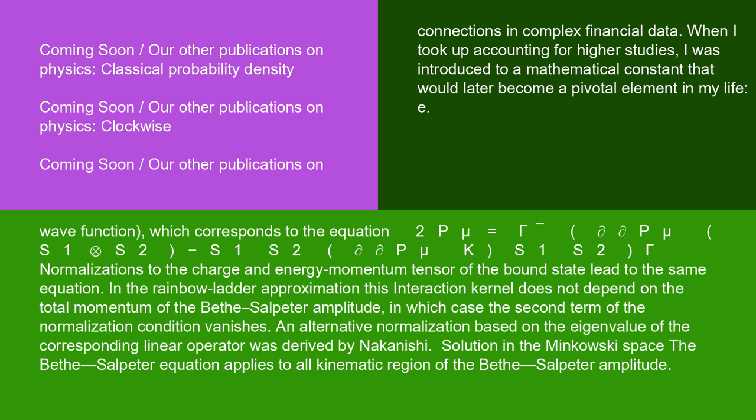In the rainbow ladder approximation, this interaction kernel does not depend on the total momentum of the Bethe-Salpeter amplitude, in which case the second term of the normalization condition vanishes. An alternative normalization based on the eigenvalue of the corresponding linear operator was derived by Nakanishi.